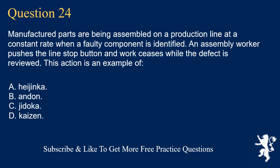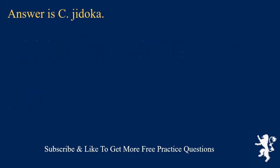Question 24. Manufactured parts are being assembled on a production line at a constant rate when a faulty component is identified. An assembly worker pushes the line stop button and work ceases while the defect is reviewed. This action is an example of: A. Heijunka. B. Obeya. C. Jidoka. D. Kaizen. Answer is C. Jidoka.